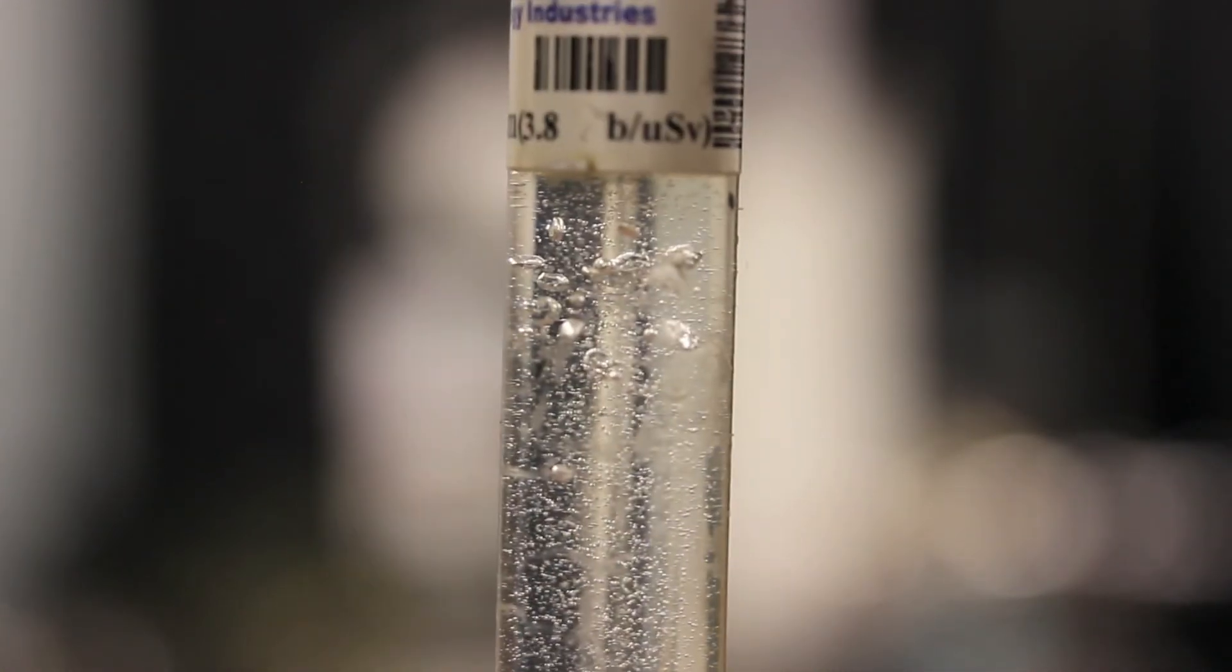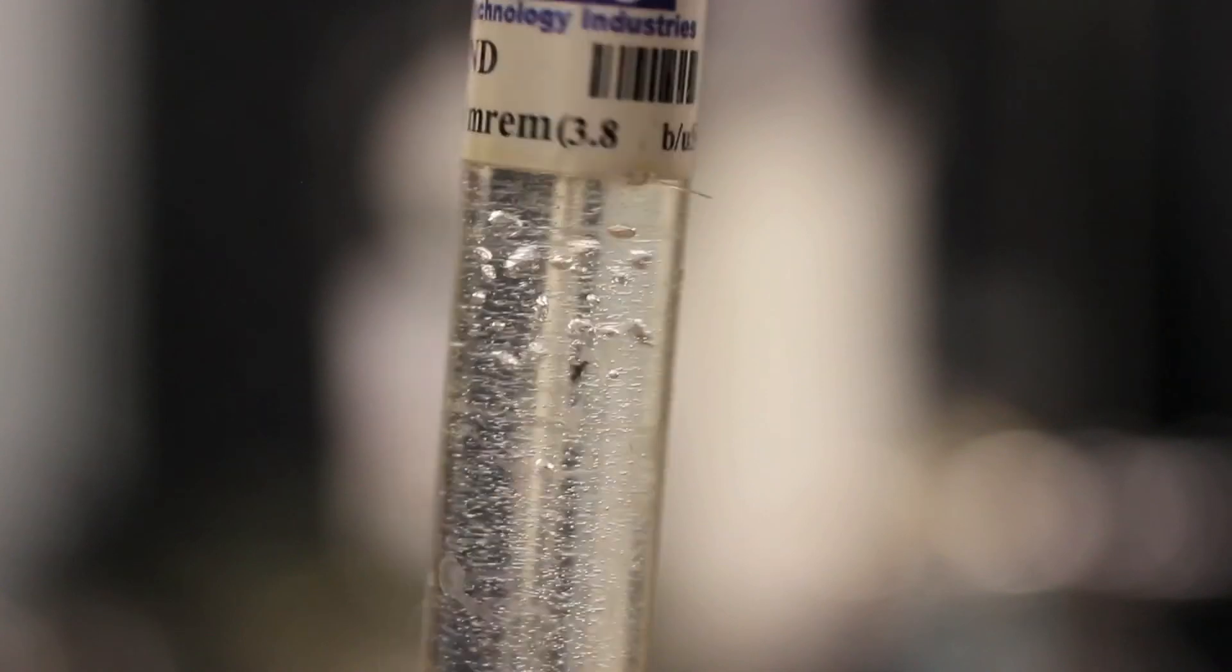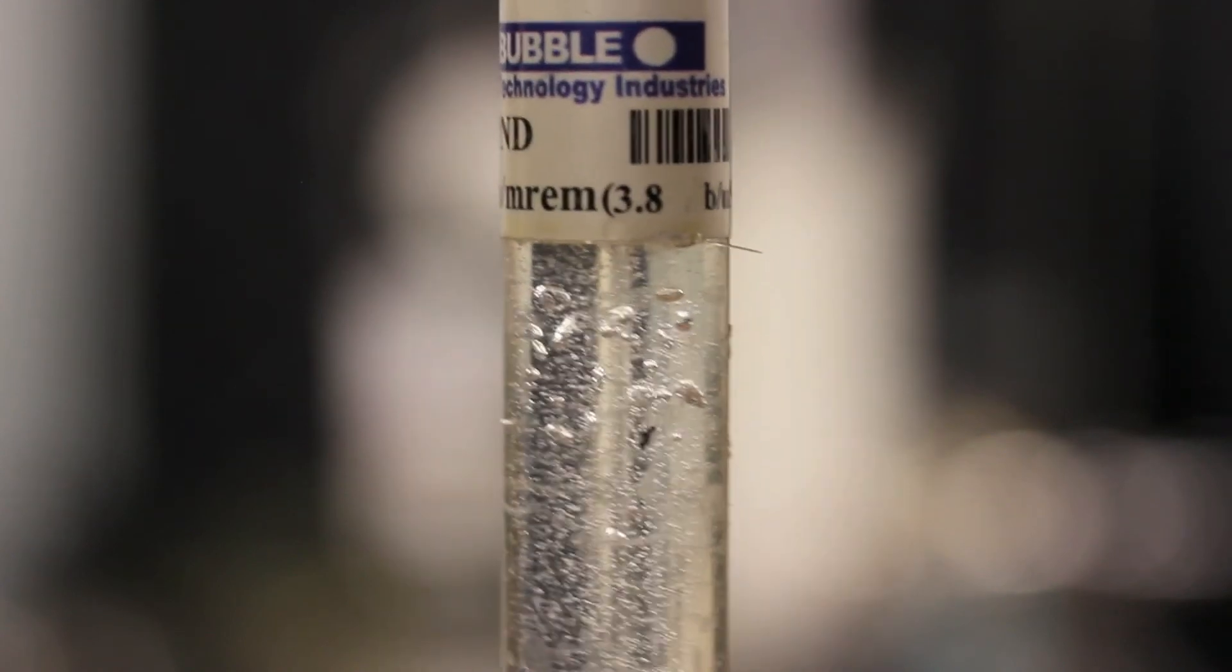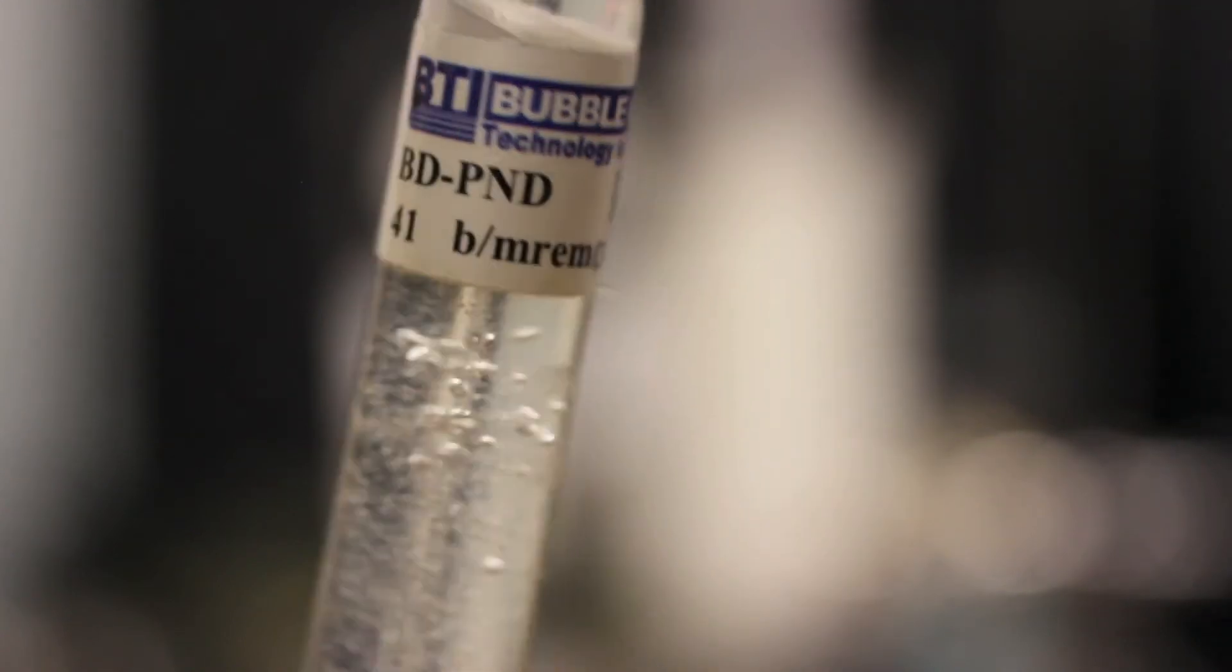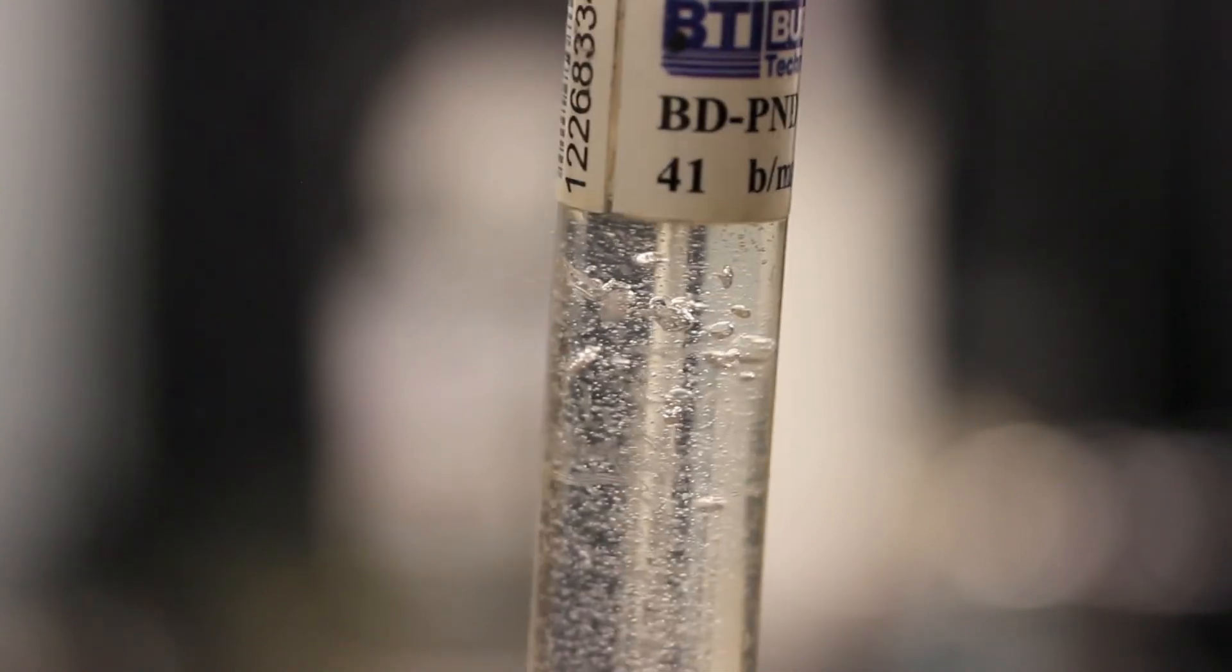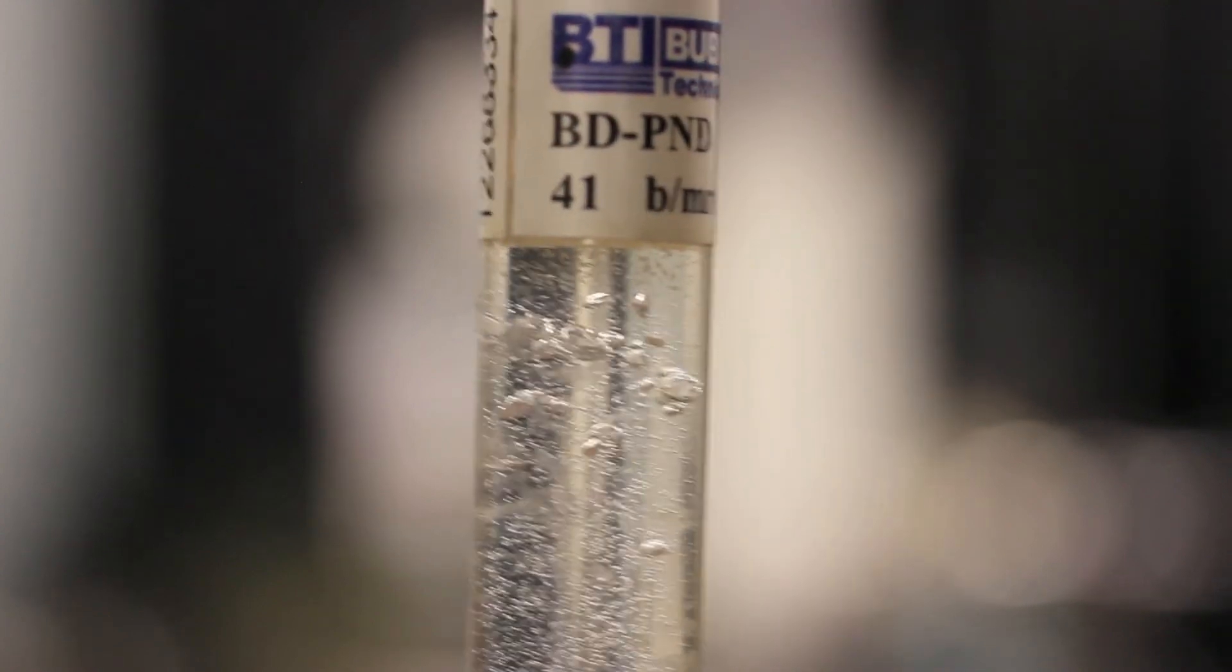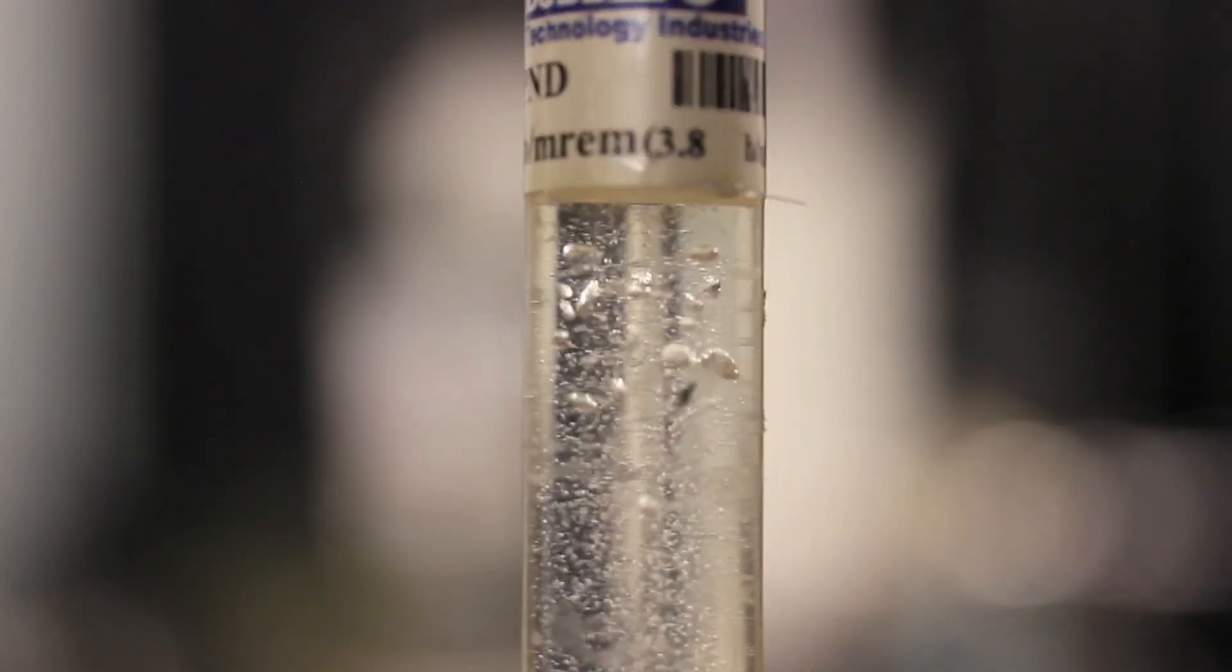And all these bubbles happened within maybe a couple minutes of themselves, so it's very obvious that these are not background readings. And also, the Victorine was picking up the readings that time too. So granted, some of the Victorine readings might have been electromagnetic interference, but this does prove that neutrons were being produced from that chamber.